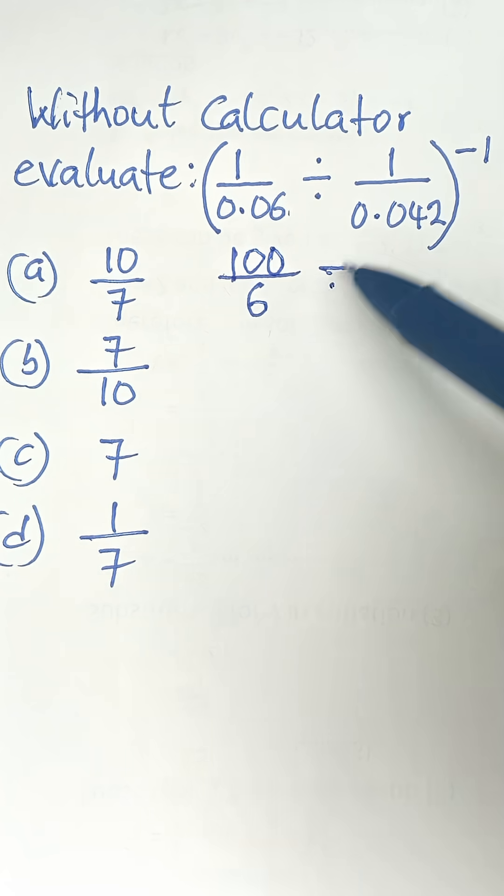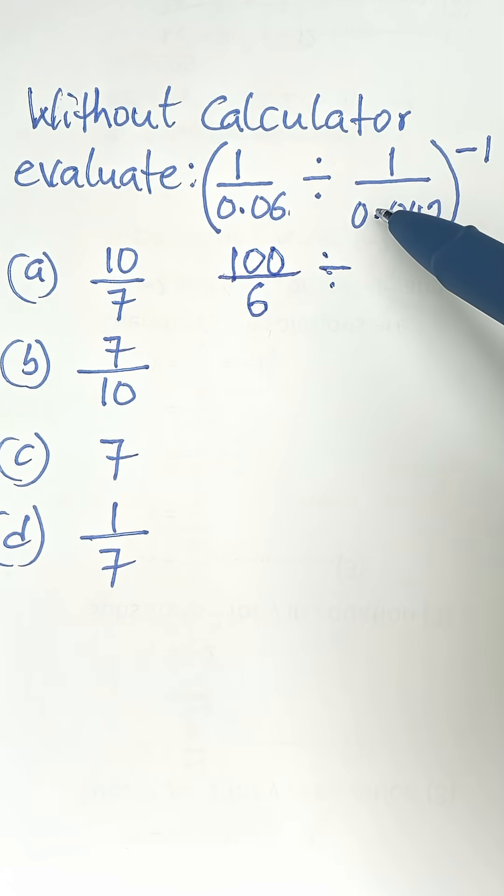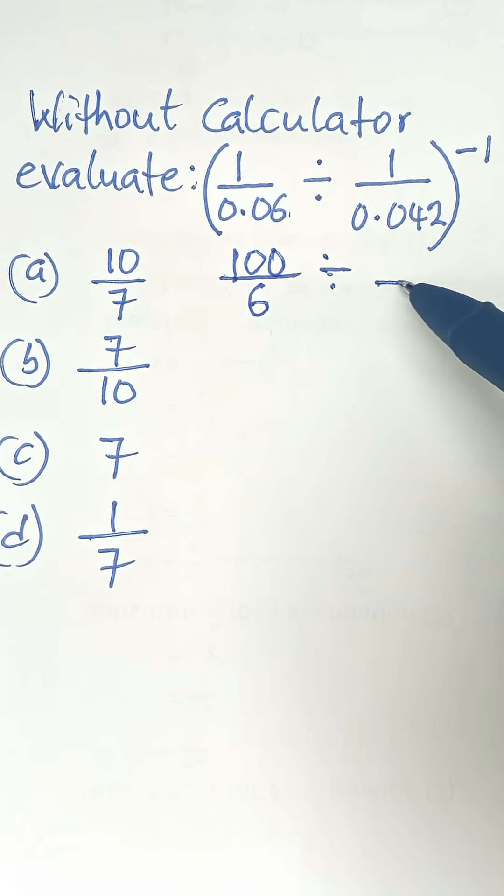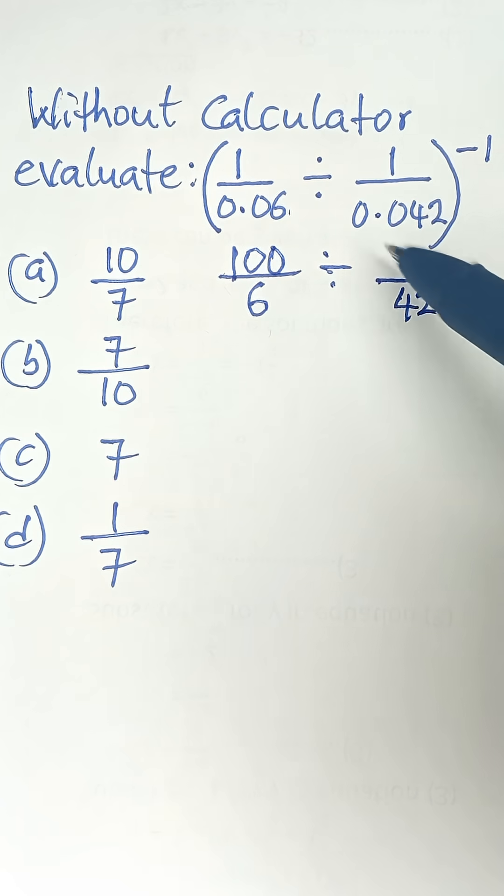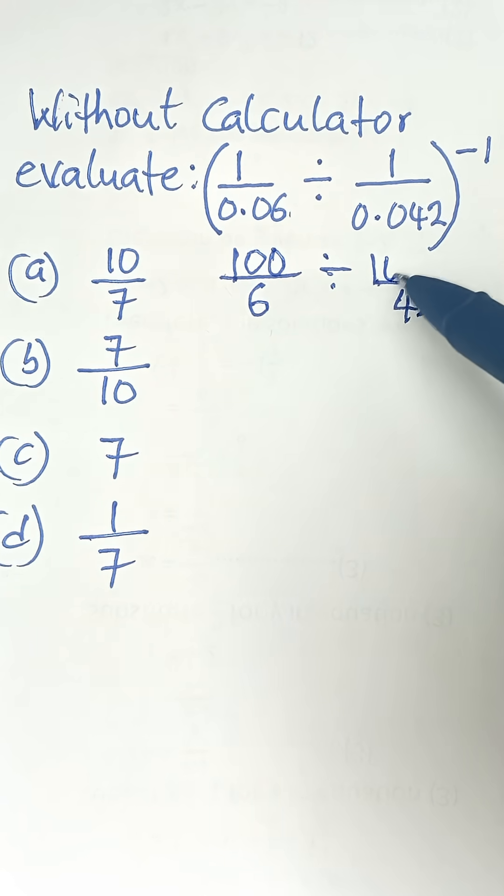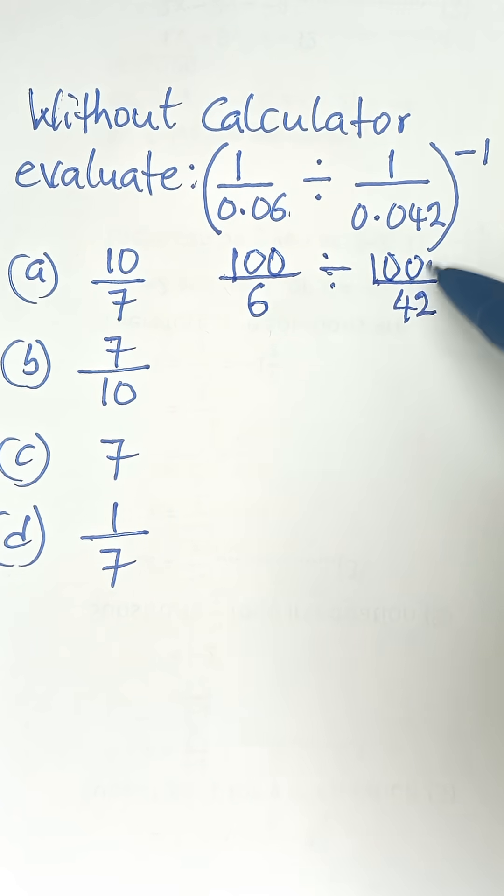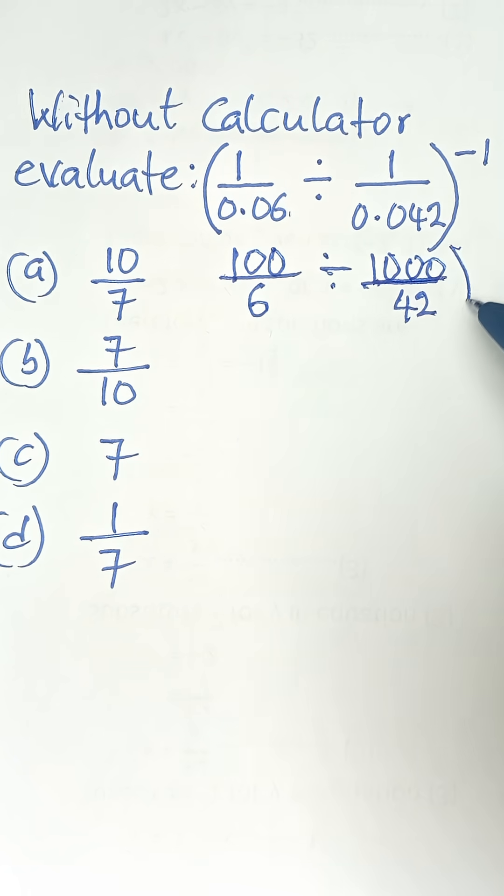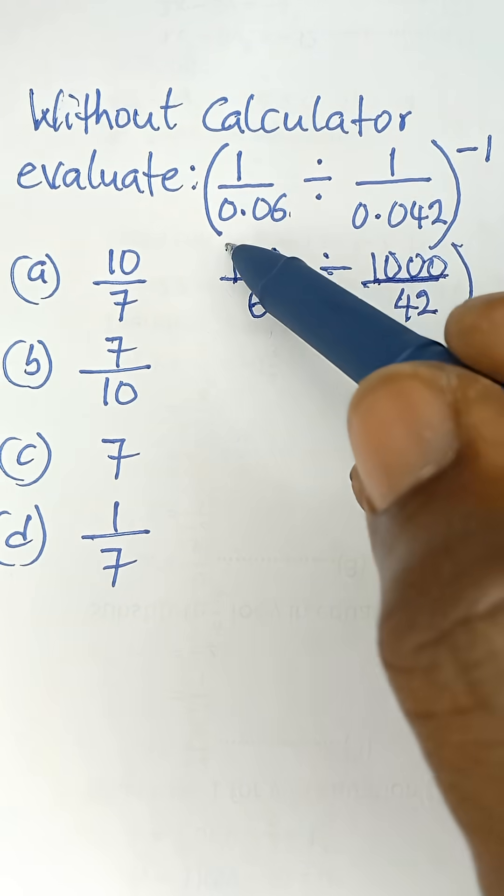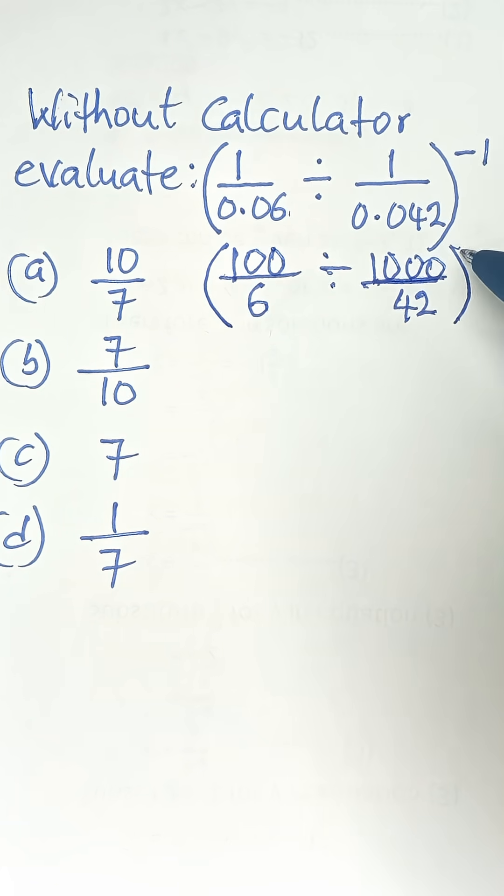Then we say divided by - here we are moving the decimal point three times, 1, 2, 3, so that that denominator becomes 42. And then we add three zeros. Because we are moving it three times, we add three zeros, so that that number becomes 1,000. And everything raised to the power of negative 1.